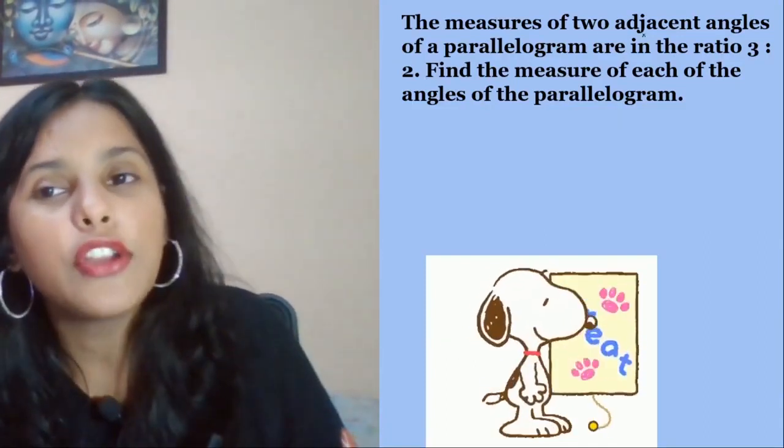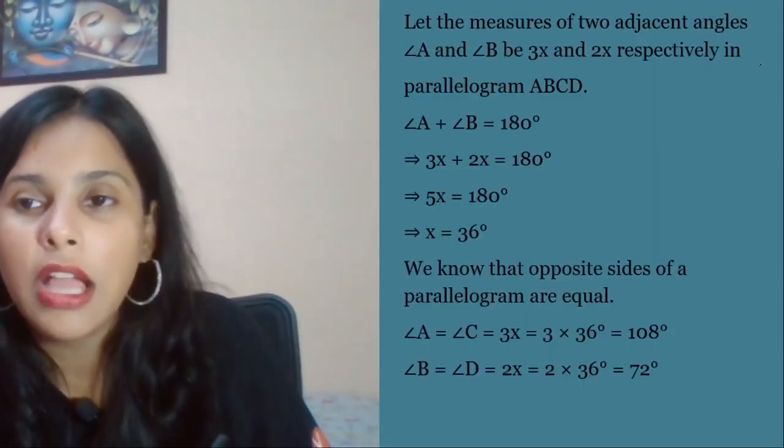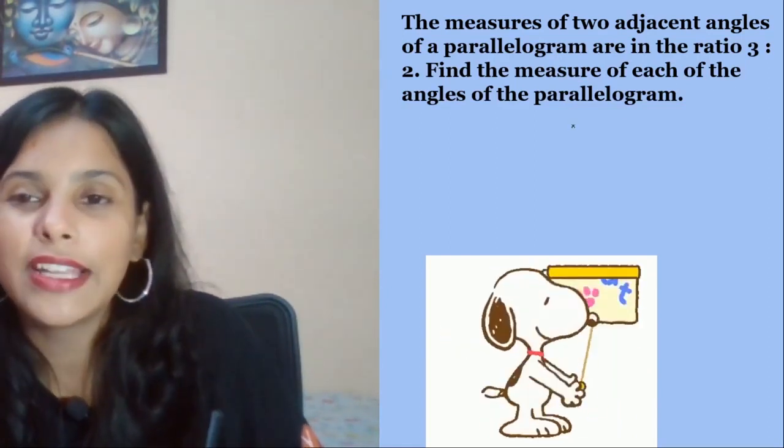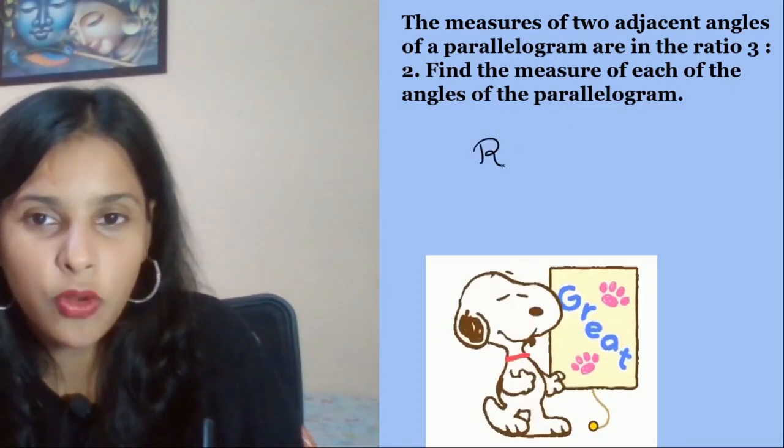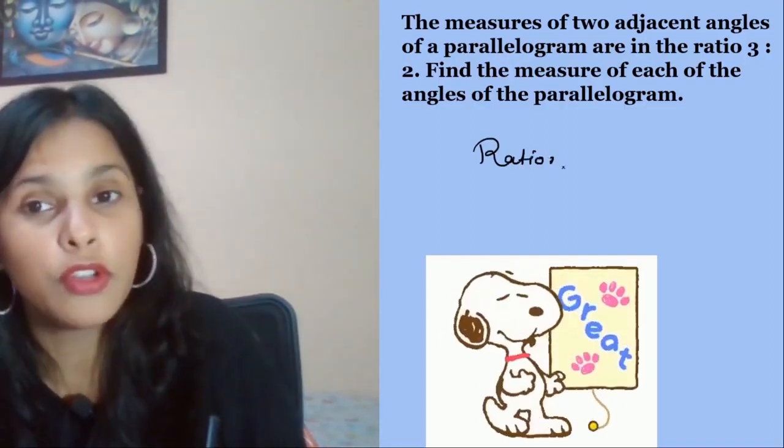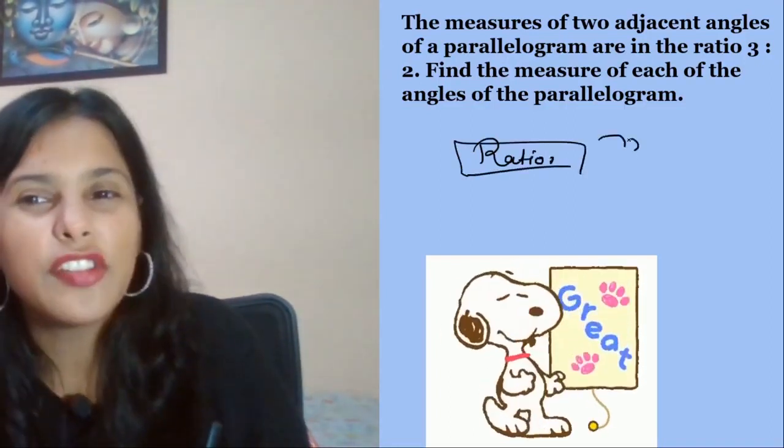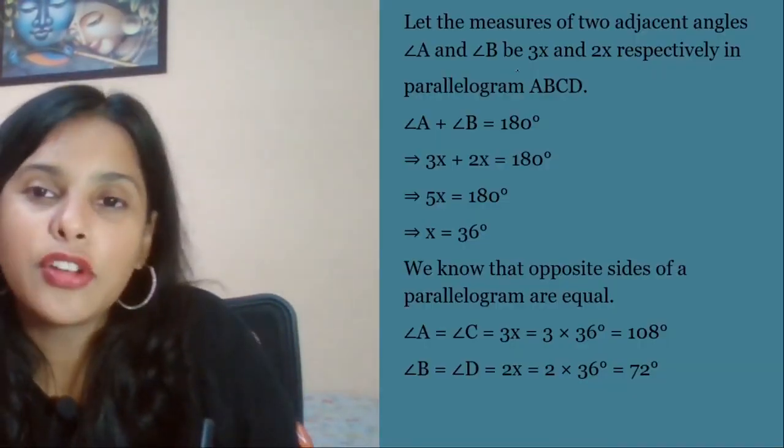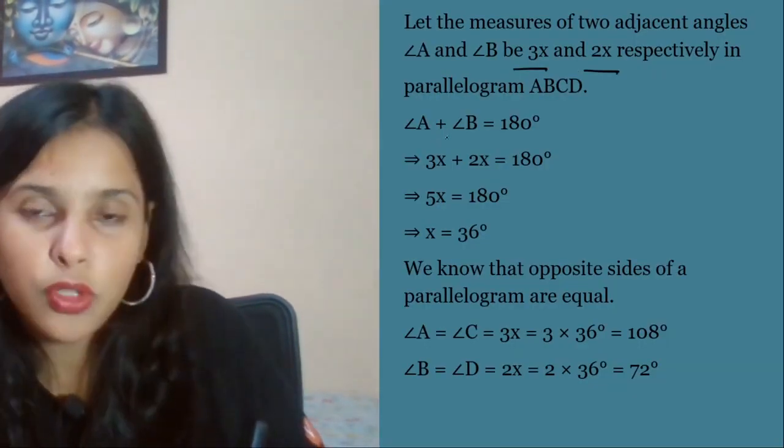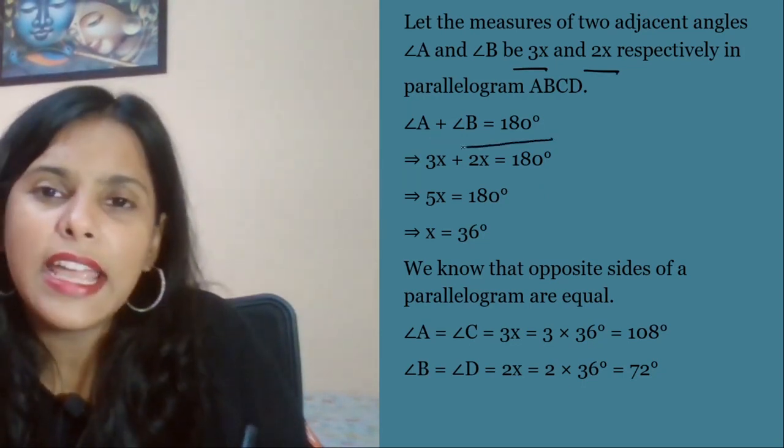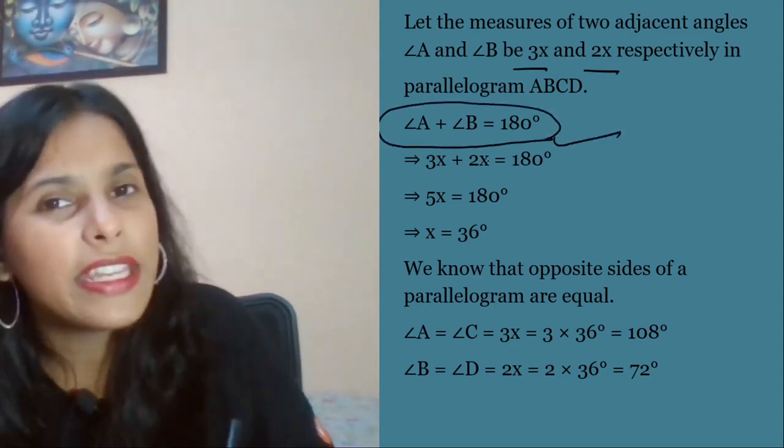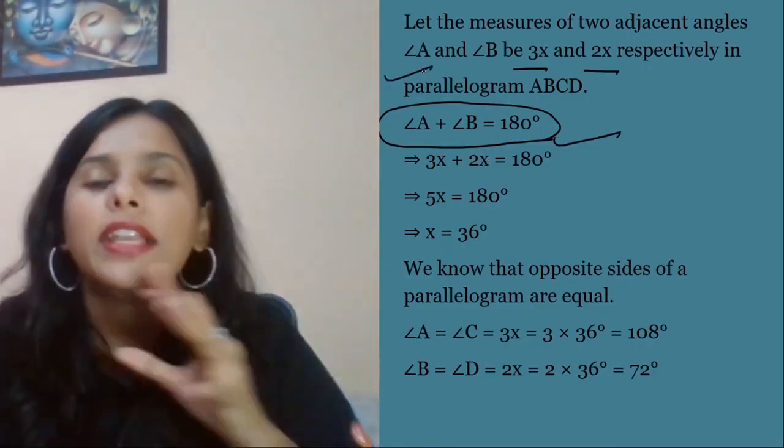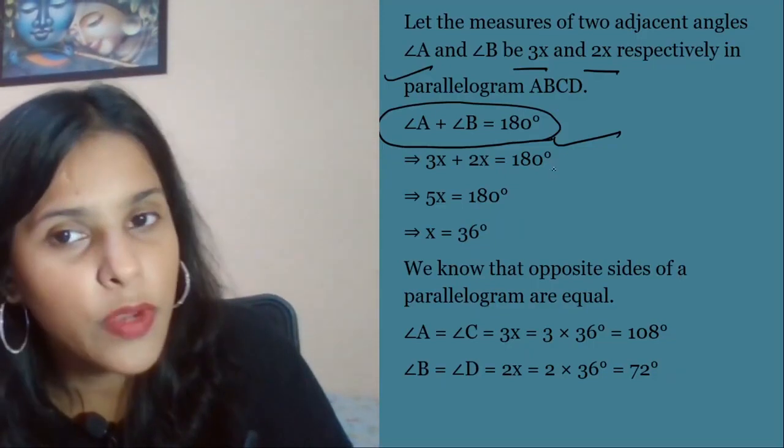Next question: The measures of two adjacent angles of a parallelogram are in the ratio 3 is to 2. Find the measure of each angle. When you give it in ratio, change it to x. So we have 3x and 2x values for angle a and angle b.